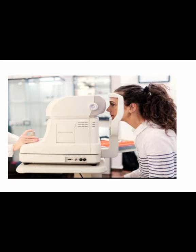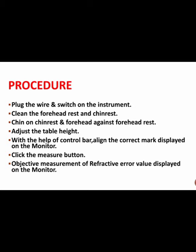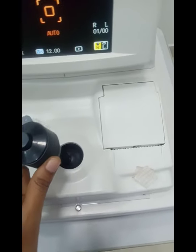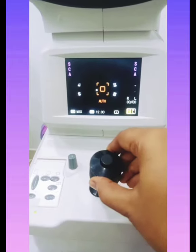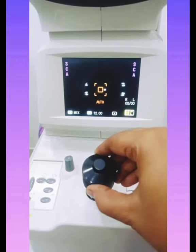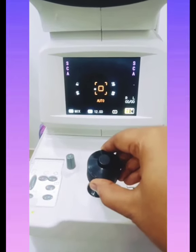If the patient is not aligned properly due to his face height, we need to adjust it by using the chin rest knob. By using the control bar we need to move the instrument according to the eye we are going to examine — either left eye or right eye. By moving the control bar left and right we can move the instrument accordingly. If we rotate the control bar upwards and downwards it moves upwards and downwards accordingly.